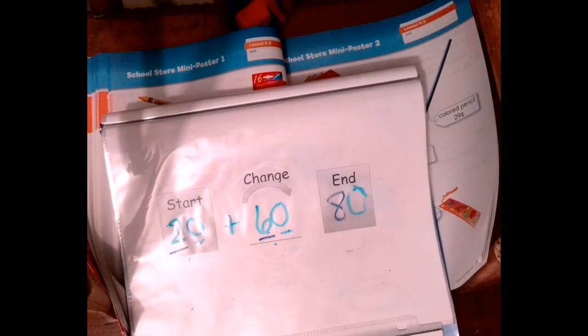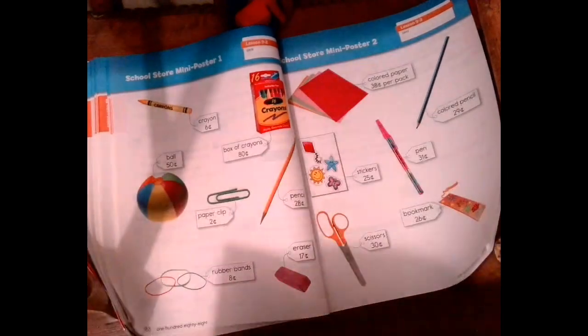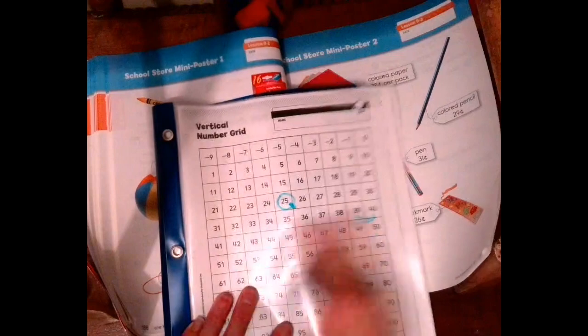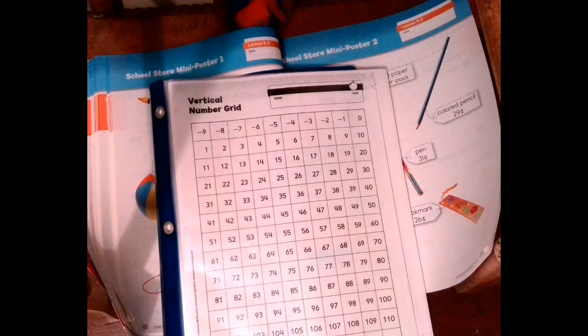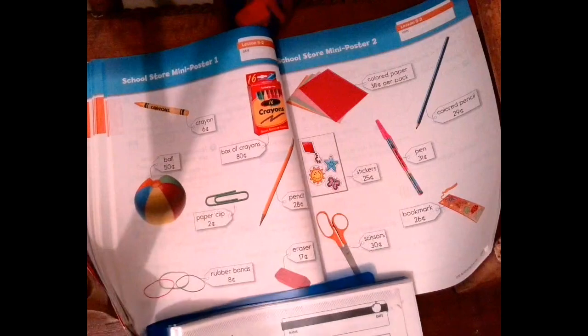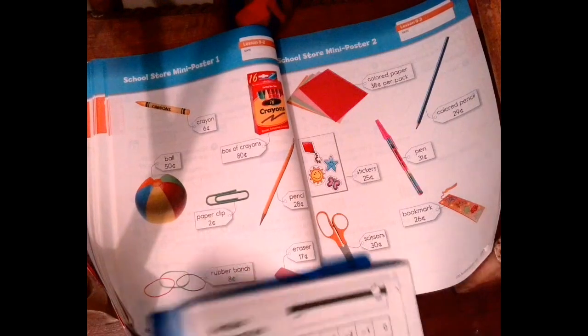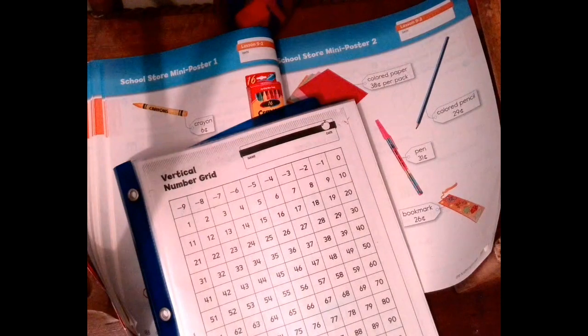Okay, so again, that's how to use the change-to-more diagram. All right, let's try another one where we're going to use the number grid. This is a comparison diagram when you're comparing something. Destiny is trying to decide whether to buy the ball, so the ball is 50 cents, or the scissors, and the scissors is 30 cents. So Destiny is trying to decide if she wants to buy the ball for 50 cents or the scissors for 30 cents. How much more does the ball cost than the scissors?